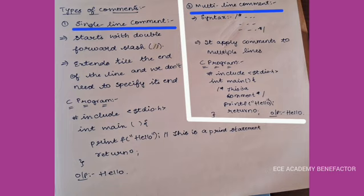When we take a C program, first is the library, then we have int main. We write the comment with forward slash asterisk. This is a comment we have written and then we closed it with an asterisk and forward slash, but we have written it in two lines. This will be taken as a multi-line comment.